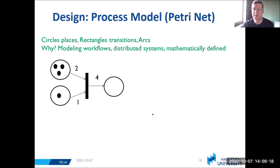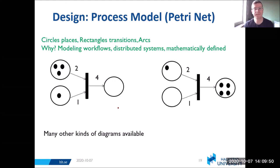Process models—this is an example of a process model called a Petri net, where the circles are called places, the rectangles are called transitions, and you have arcs connecting these. Why is this sort of interesting? Because you can model workflows and distributed systems, and it's mathematically defined. Here, if you have this example, you've got this arc with two, so this will be reduced by two, this will be reduced by one, and then you'll get four over here. There's many, many other kinds of diagrams that people use, but this is just some of that.